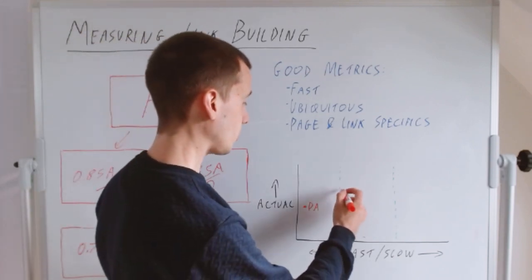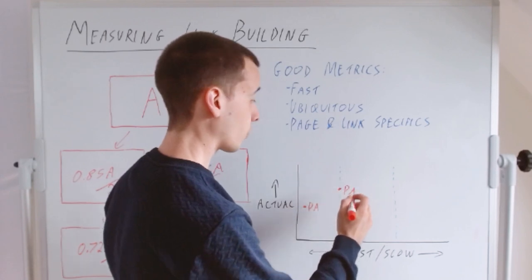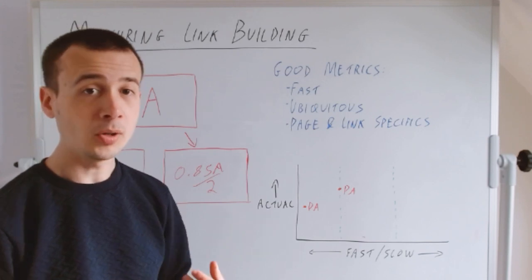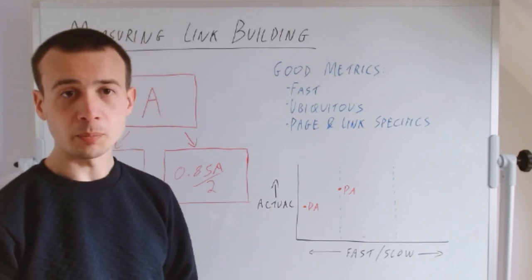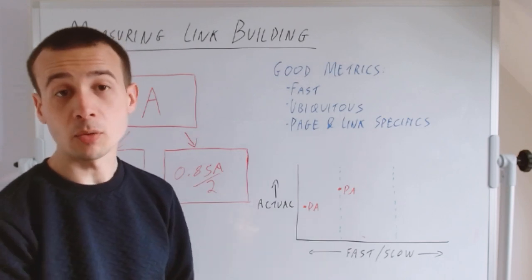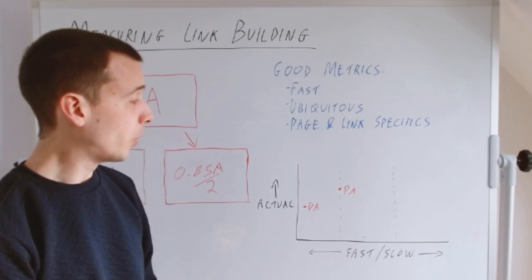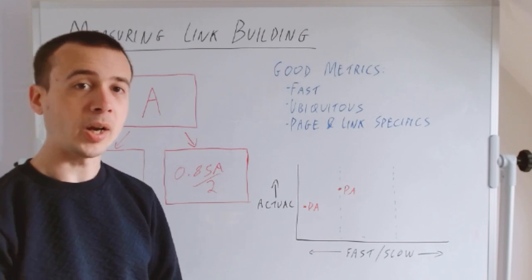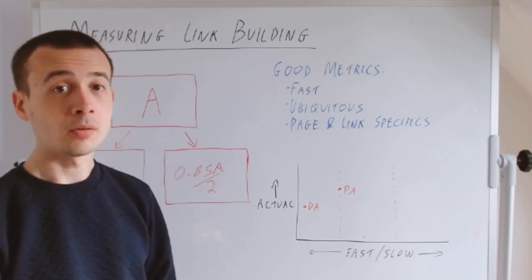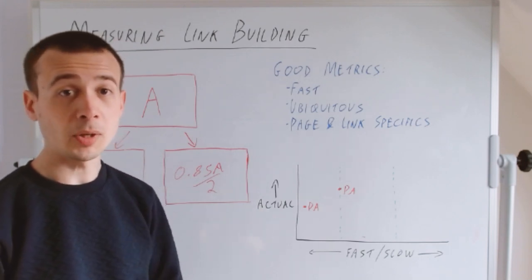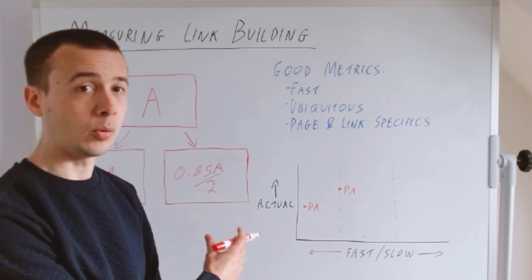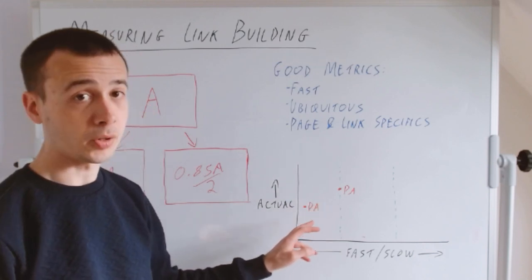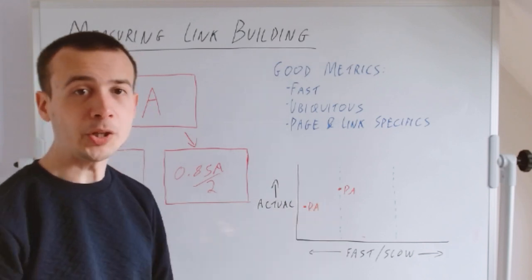If I'm saying I want DA but not necessarily domain level, you might say Moz has a metric for that—page authority. Like most page level metrics in the industry, including Google's and including our own, page authority is initially informed by some domain level factors as well as page level factors. But it is a lot closer to measuring the value and ranking potential of a specific page than domain authority is. It is capturing some of this nuance. Page authority is a bit slower than domain authority because you have to wait for Moz to discover and crawl the page.